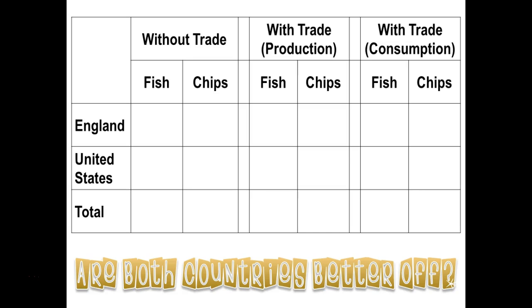So why do we trade? Without trade, England could have 20 fish and 15 chips, and the U.S. could have 50 fish and 25 chips — that's a potential outcome for both countries. We would see 70 total fish and 40 chips consumed between the two of them.